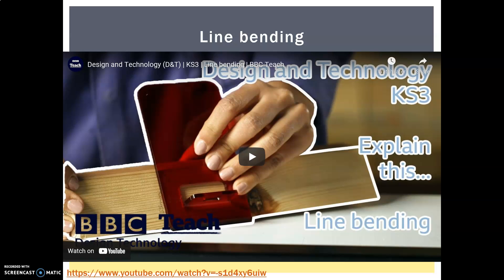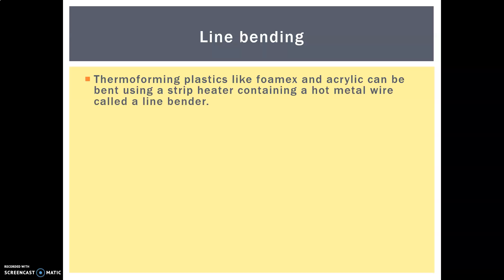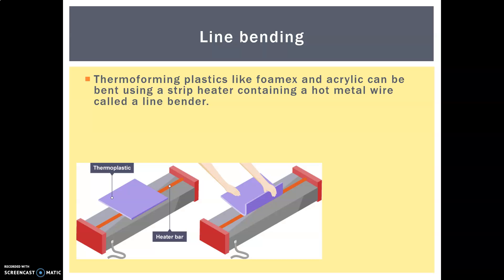Next up, we've got the easiest of the lot — line bending. In line bending, a thermoplastic such as Foamex or acrylic can be bent using a strip heater, which contains a hot metal wire. This setup is called a line bender — the hot metal wire is supported inside a frame so you don't burn yourself. You lay the thermoplastic sheet over the top and just that metal wire heats up one small area so that you can bend it at an angle — could be 90 degrees, 45 degrees, or something else.